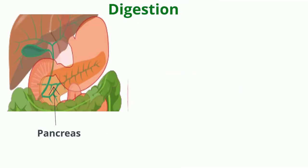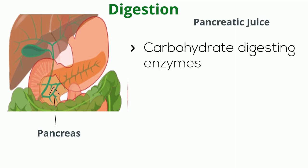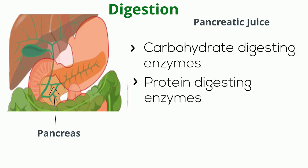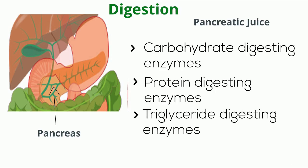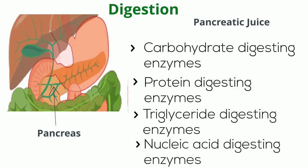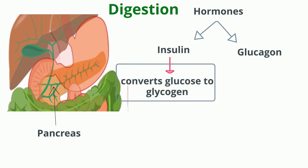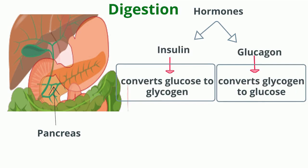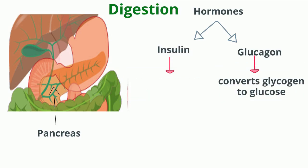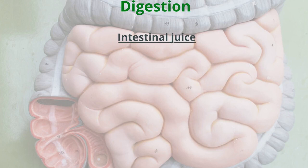The pancreas is the second largest gland in our body, which lies below the stomach. The pancreas secretes pancreatic juice which contains digestive enzymes, including carbohydrate-digesting enzyme called pancreatic amylase; protein-digesting enzymes called trypsin, chymotrypsin, carboxypeptidase, and elastase; triglyceride-digesting enzyme in adults called pancreatic lipase; and nucleic acid-digesting enzymes called ribonuclease and deoxyribonuclease. The pancreas also produces two types of hormones: insulin, which is essential for converting glucose and storing it as glycogen, and glucagon, which is essential for converting glycogen to glucose. Apart from the above enzymes, the intestine also secretes intestinal juice which contains various enzymes to complete the digestion process.